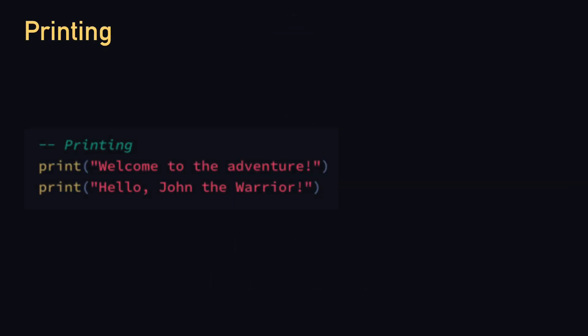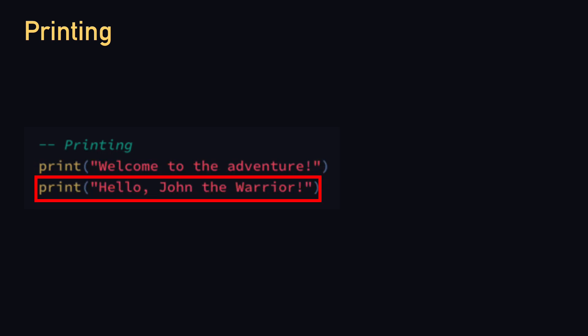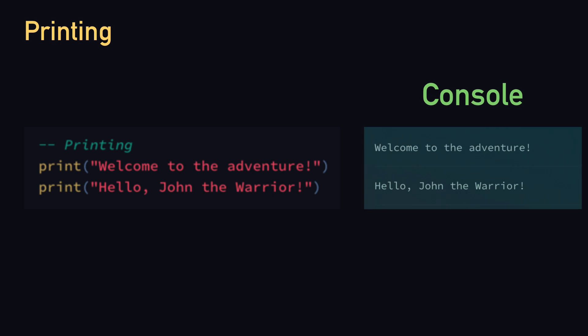The first part of Lua we'll be learning is printing. Printing allows us to display things inside of the console. Let's look at this example. The first one says 'welcome to the adventure', which is going to be printed to the console, and the next one says 'hello, John the warrior'. As you can see, it prints out all the stuff that we want, so the printing is working.